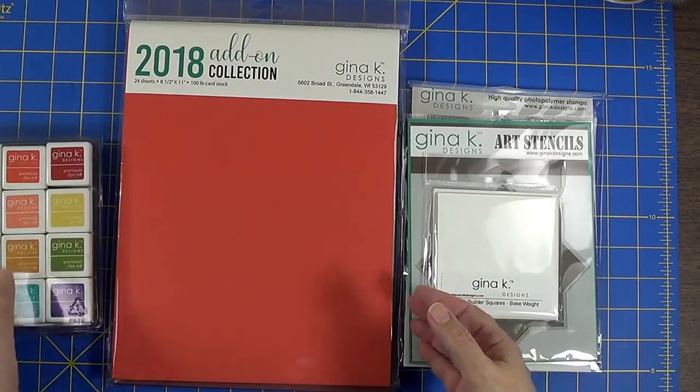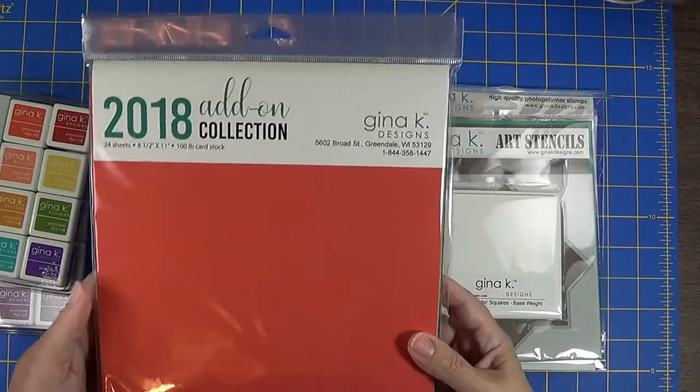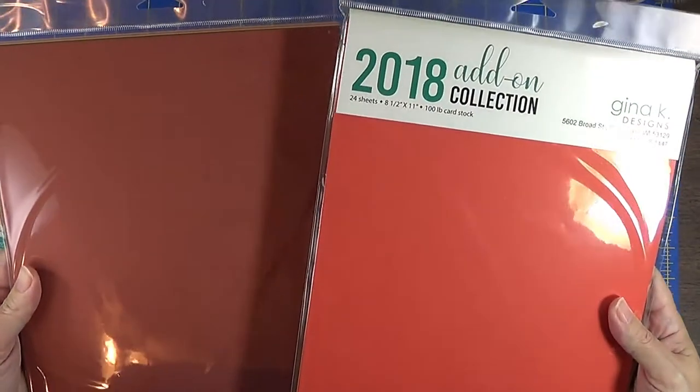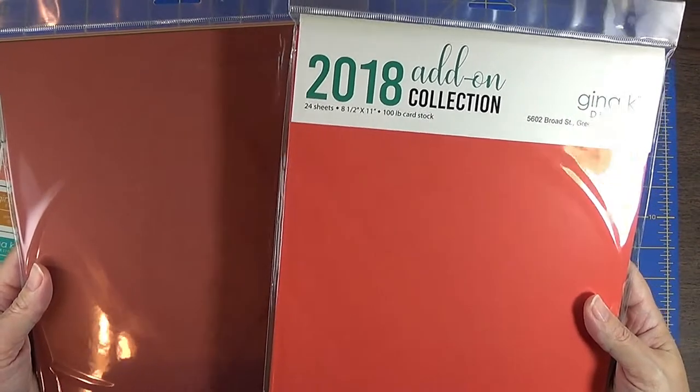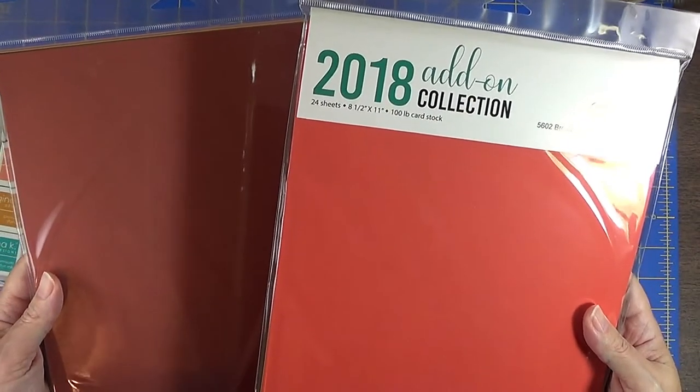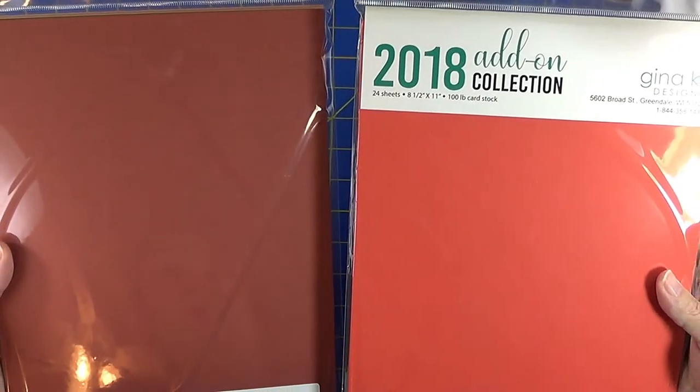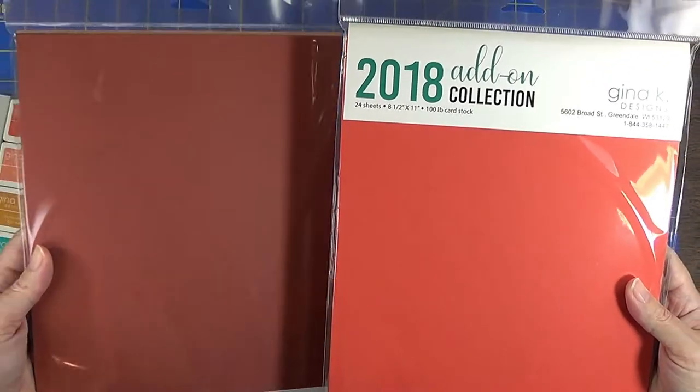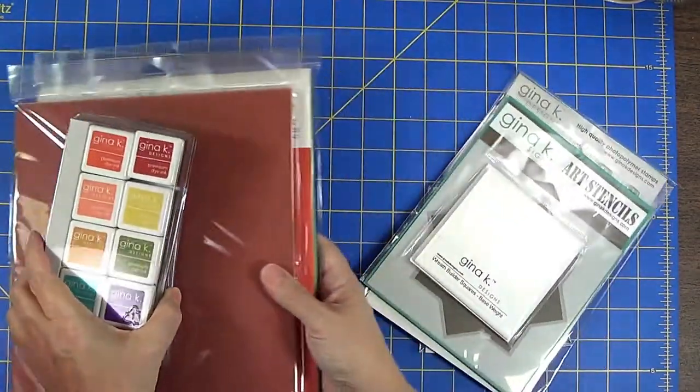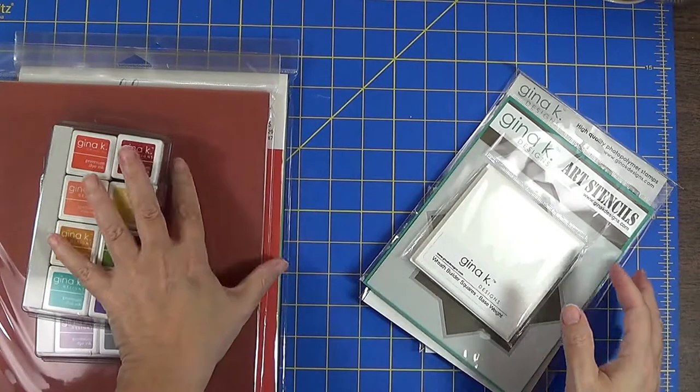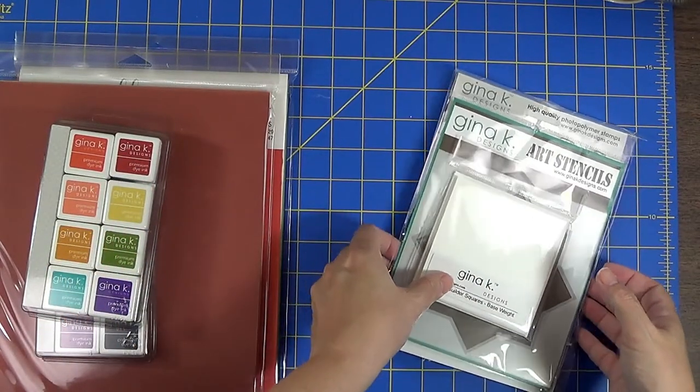To go with it I ordered cardstock and Gina K Designs cardstock is 100 pound so it's very heavy. Each package contains 24 sheets and it has three each of eight different colors and those coordinate with the colors of the ink. I'm going to open those up in just a minute and show you them together and stamp and we can see how they coordinate.